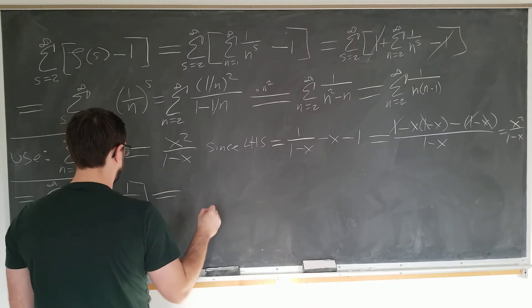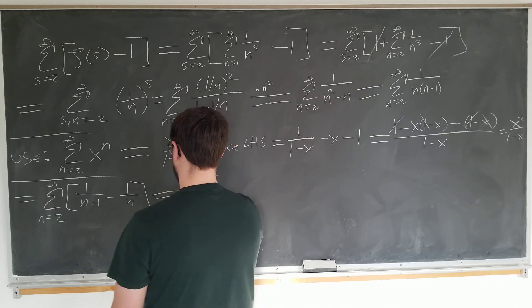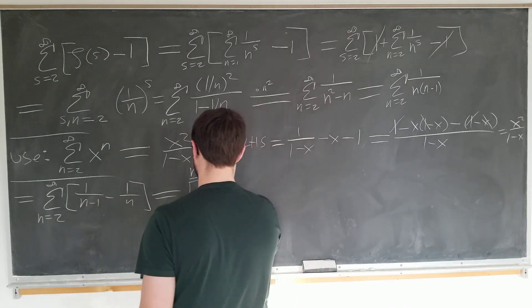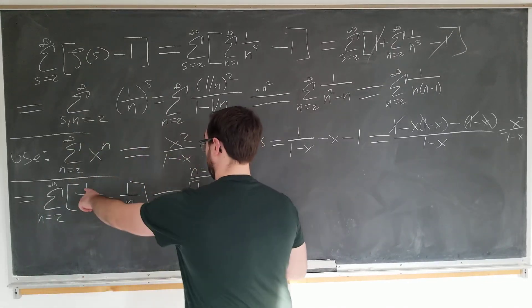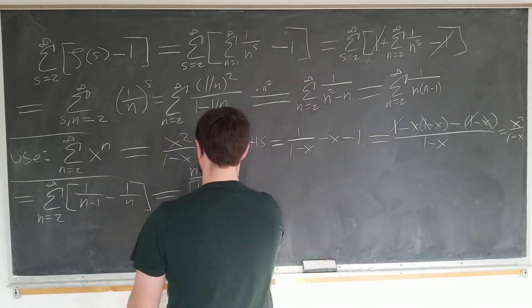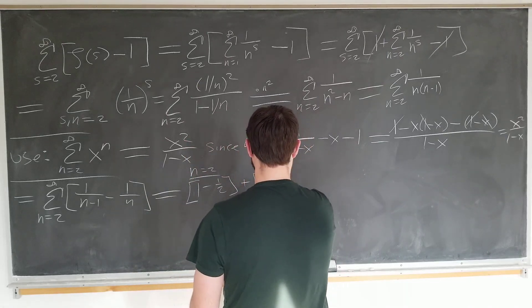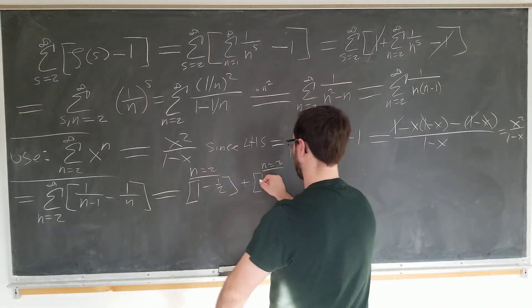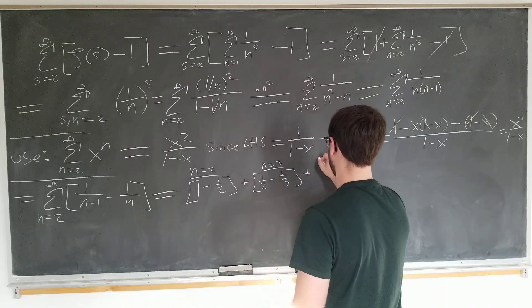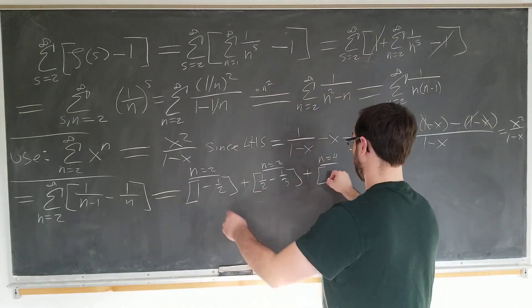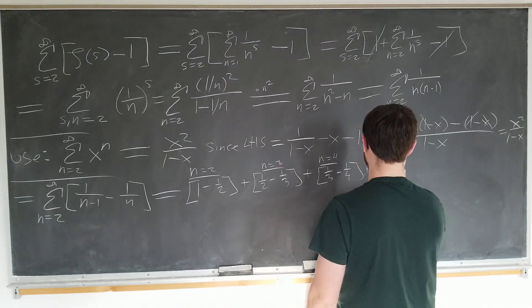Now we can just start plugging in terms basically. Look at the n equals 2 term. It's going to be 1 over 2 minus 1 is 1, which is 1. 1 over 2 minus 1 half. Now we have the next term, which is n equals 3. This is going to be 1 half minus 1 third. And the n equals 4 term is going to be 1 third minus 1 fourth.